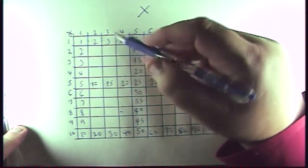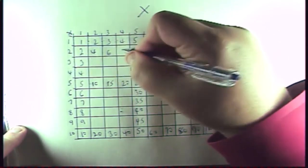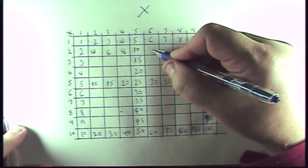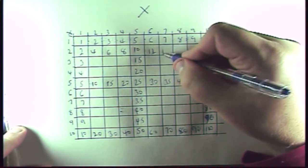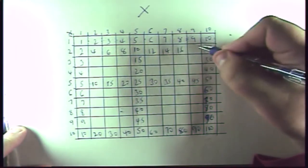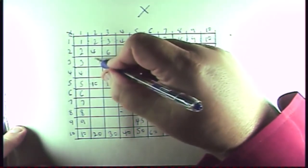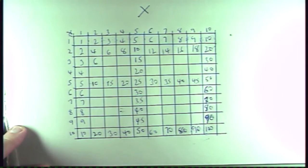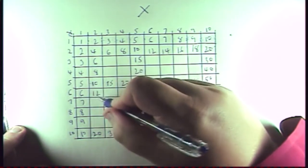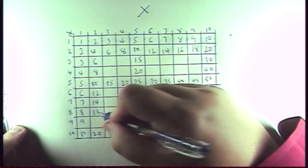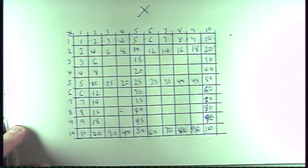Now we're going by multiples of two. Two times two is four, and then six, eight, ten, twelve. Add two more: fourteen. Add two to fourteen, that's going to be sixteen. Add two to sixteen makes eighteen. The same progression continues — four, six, eight, ten, twelve, fourteen, sixteen, eighteen, and then twenty.